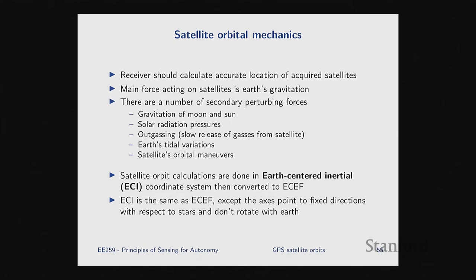That covers the first two coordinate systems. Now let's talk about the satellite in orbit. The receiver needs to calculate the accurate position of the satellite. As the satellite orbits Earth, various forces affect its trajectory. The main one is gravity — the gravitational force of the Earth is the primary force governing how satellites move.